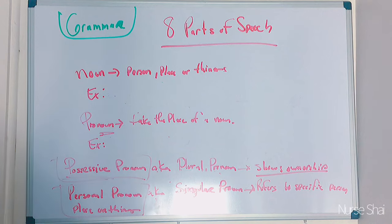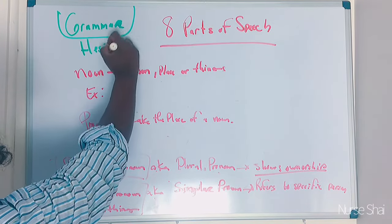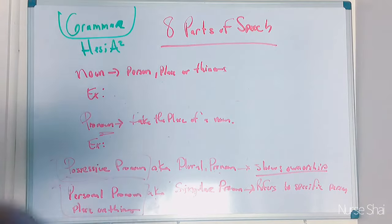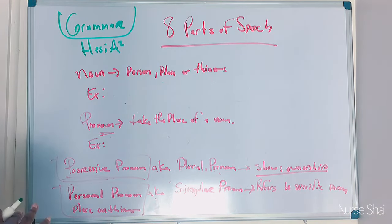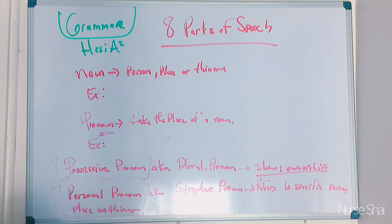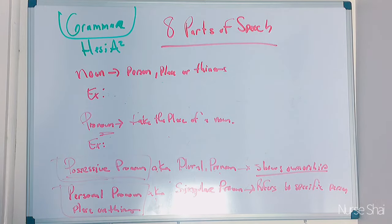We're going to be discussing the grammar section. We want to take notes on this one because this is going to be a very, very thorough lesson — everything you need to know about the grammar part for the HESI A-squared test. I've taken the HESI two times. I've also taken the pre-nursing exams called the Kaplan and the TEAS. The HESI information that's out there is more like a blueprint for the rest of the tests. This information is very vital — it doesn't matter what test you're taking.